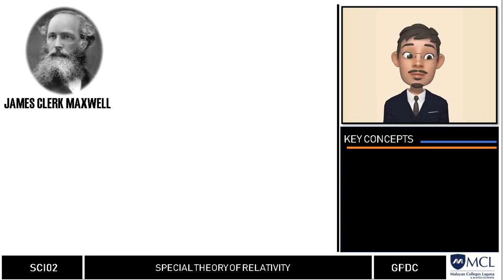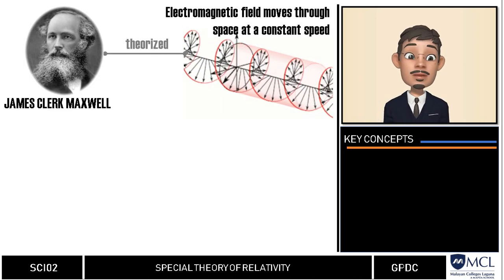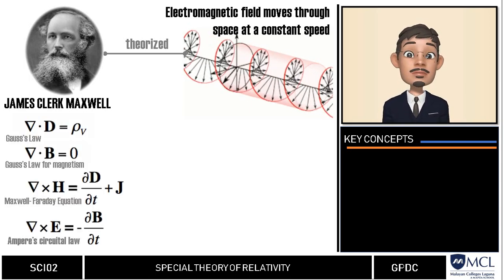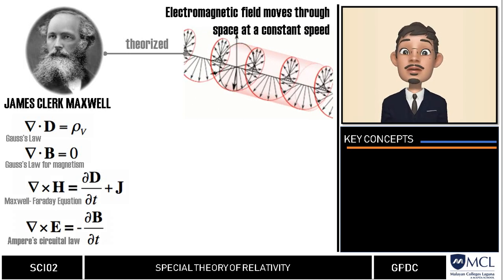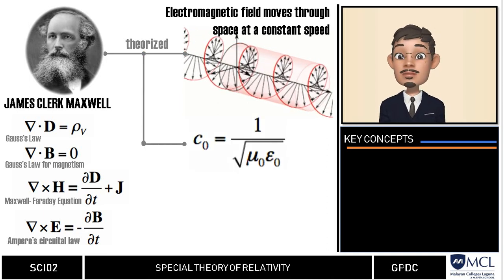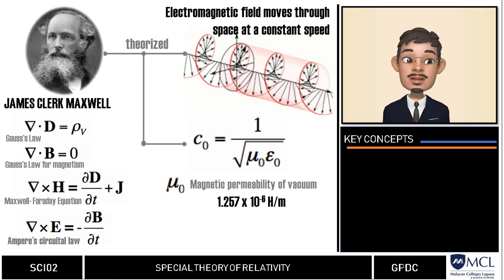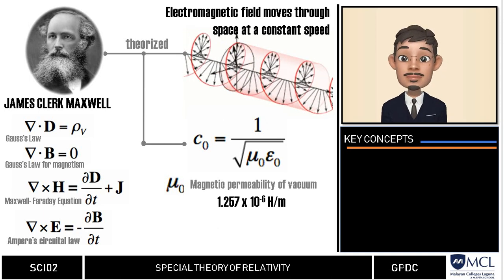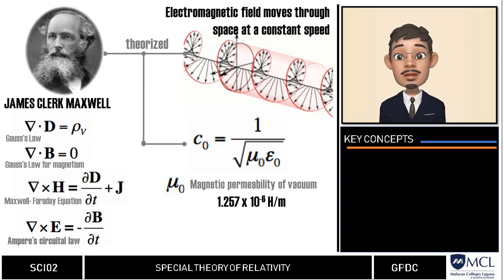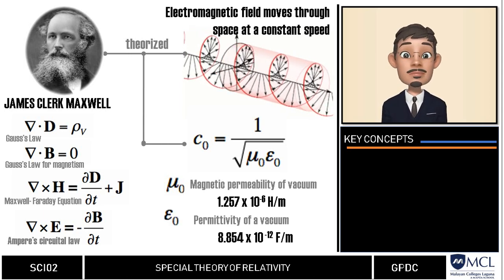In 1865, James Clerk Maxwell theorized that electromagnetic fields move through space at a constant speed. Maxwell wrote a set of four equations that simultaneously describe all the laws of electricity and magnetism. In his theory, the speed of light is expressed as c equals one over the square root of mu sub zero — the permeability of a vacuum, with a constant value of 1.257 times 10 to the negative 6 henries per meter.